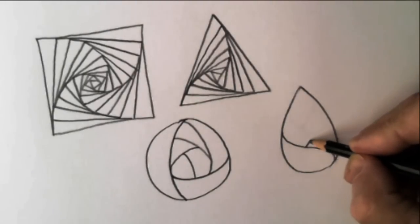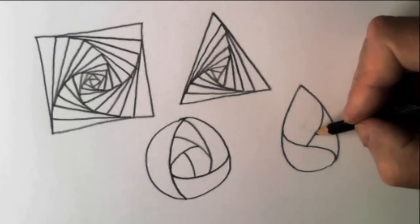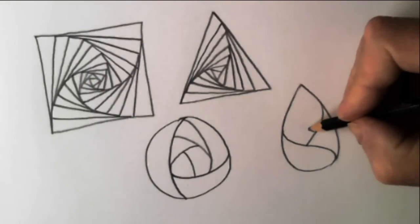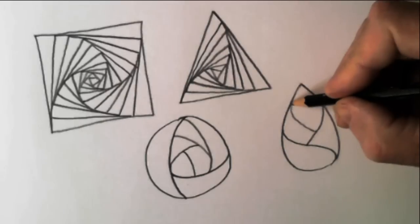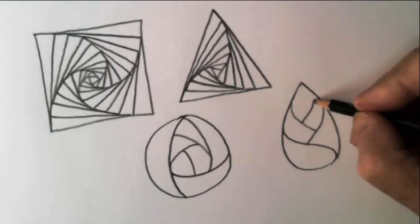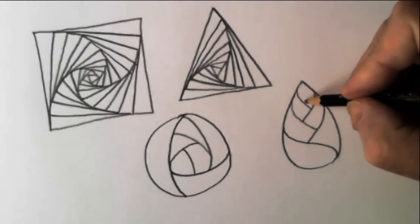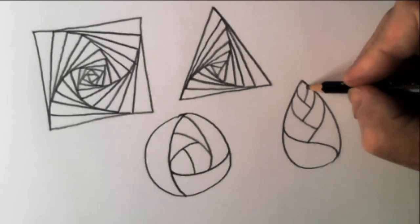Then from the side here, we'll take a line up to there, slightly curving as we reach the outside. Another one like that, another one like that, another one like that, maybe another one like that.